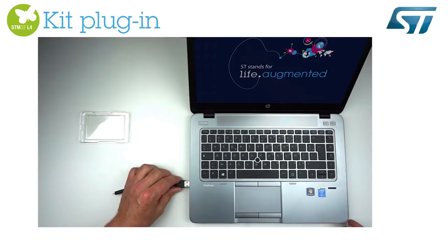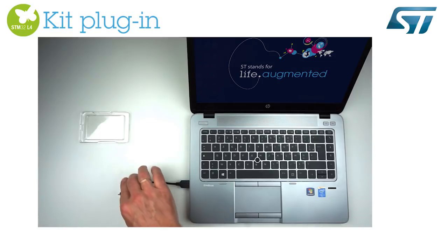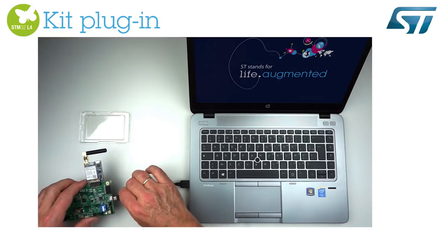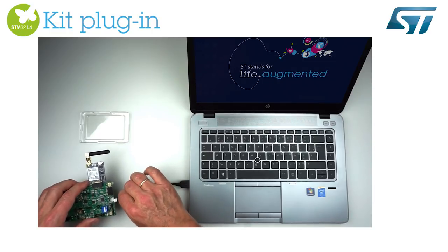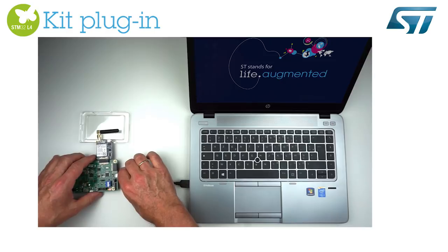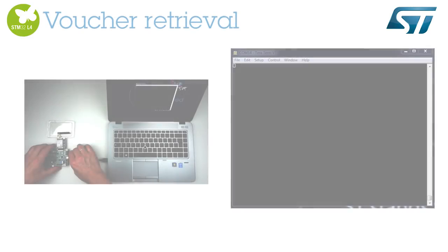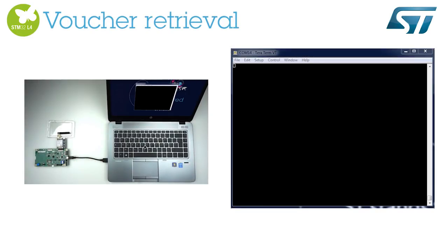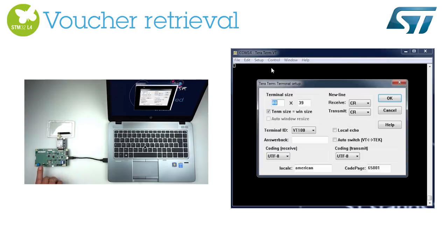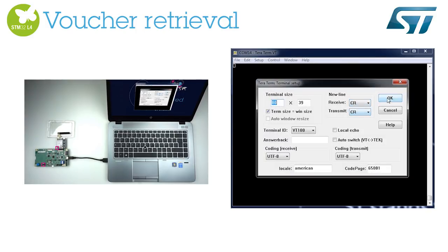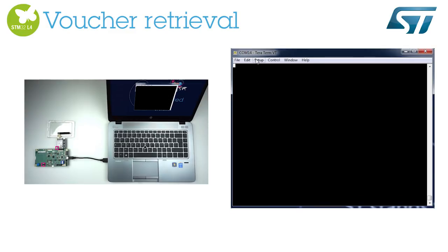Install the STLink V2 USB drivers. Please note that admin rights are needed. Then connect the pack to the PC using the STLink USB port. Press the STM32 reset button. Install and open the TerraTerm console application.